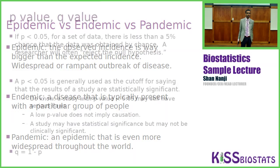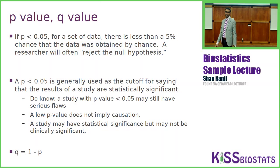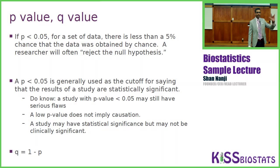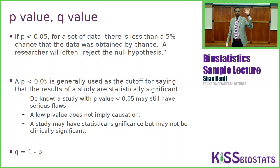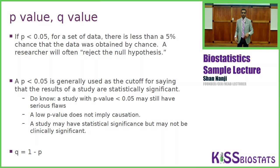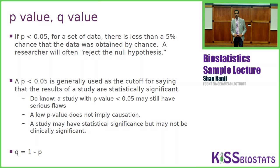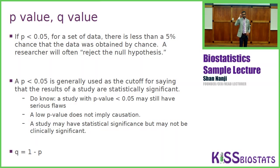P-value versus Q-value. A p-value less than 0.05 means that for a set of data, there is less than a five percent chance that the data was obtained by chance. A p-value less than 0.05 is generally used as the cutoff for saying that the results of a study are statistically significant. However, a study with a p-value less than 0.05 may still have serious flaws, a low p-value does not imply causation, and a study may be statistically significant but not clinically significant.